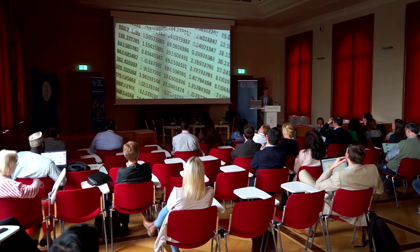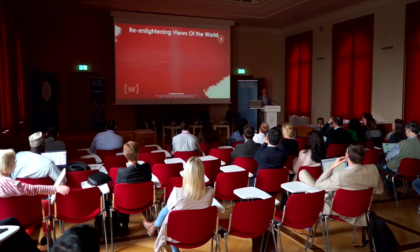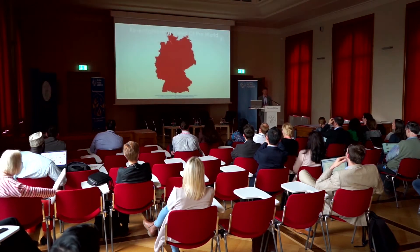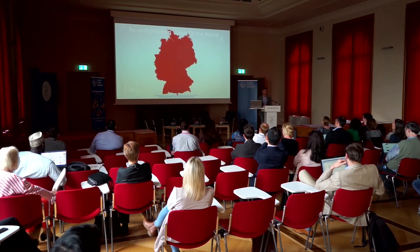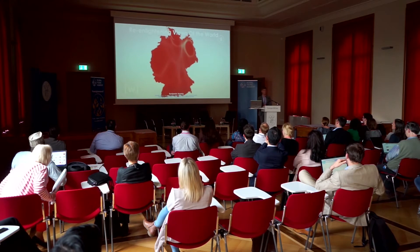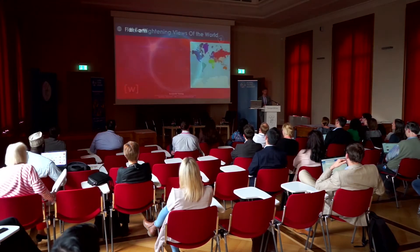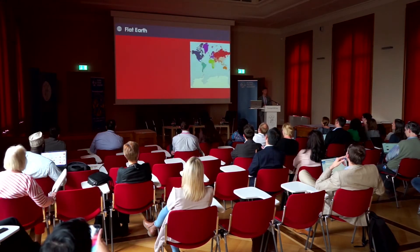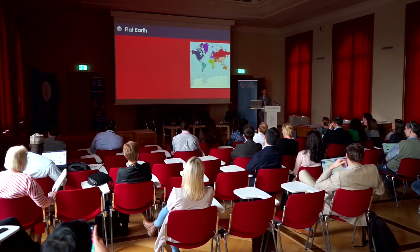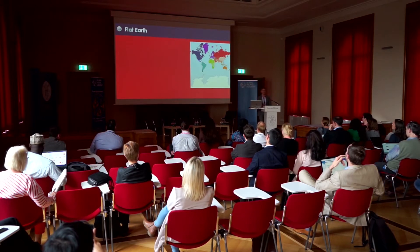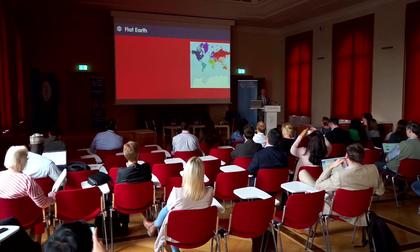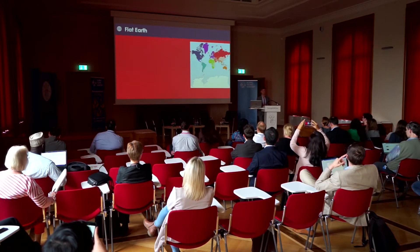What I want to talk about today is I want to show you the world as you've probably never seen it before. Since I only have four minutes, let me go back 500 years in time. 500 years ago, a person called Mercator came up with this type of map projection, which helped us to navigate the oceans, which helped Europeans to colonize the planet, which was basically good for navigating around the world.